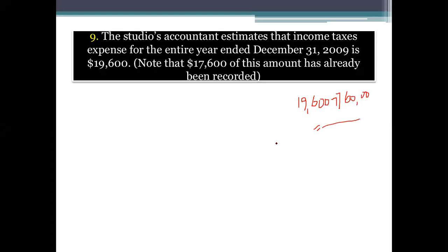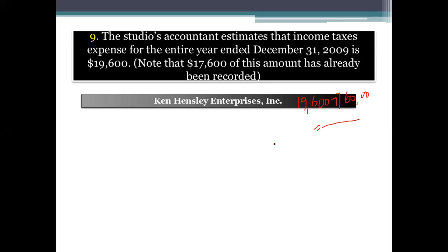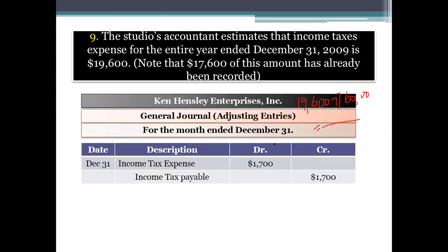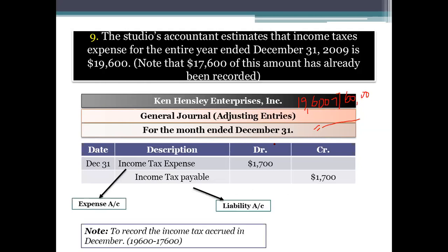The remaining amount to pay in December is calculated as $19,600 minus $17,600, which equals $2,000. The journal entry is: Income Tax Expense debit $2,000 and Income Tax Payable credit $2,000. Income tax payable is a liability account. This records the income tax accrued in December. That was all about problem 4.7a.